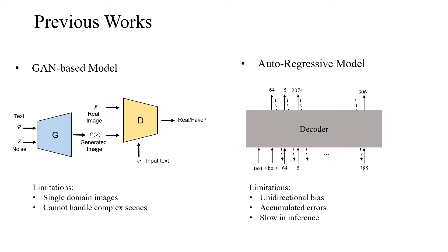Previous GAN-based methods can generate images from text. However, they could not handle complex scenes. Another approach is autoregressive models. This model suffers from unidirectional bias and error accumulation issues. Besides, their inference time increases linearly with the output image resolution, so it's quite time consuming.